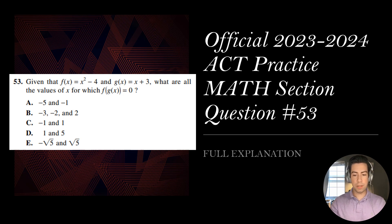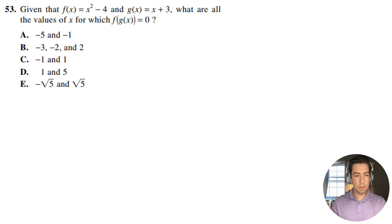Alright, question number 53, let's get right into it. So we have given that f of x equals x squared minus 4 and g of x equals x plus 3. What are all the values of x for which f of g of x equals 0?